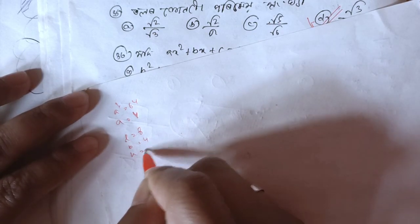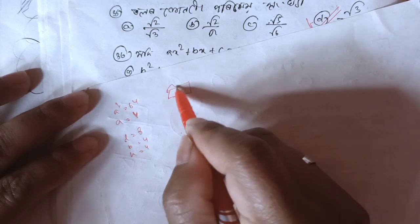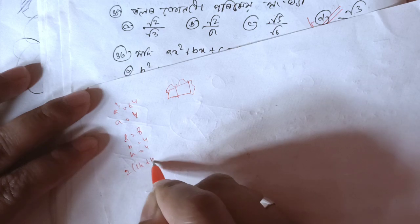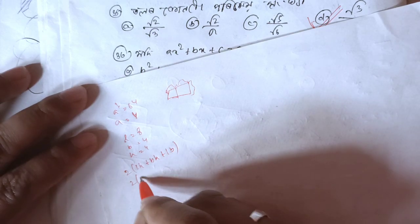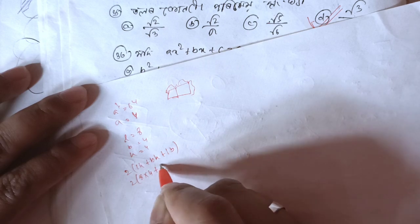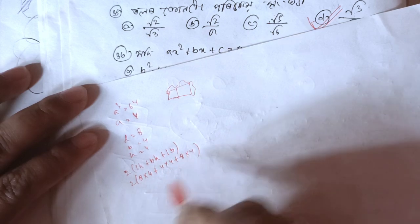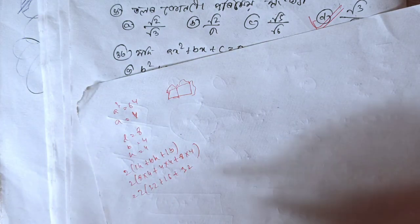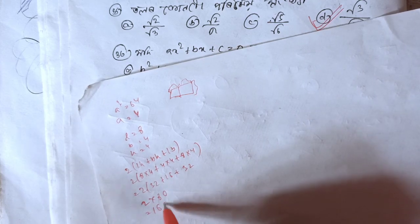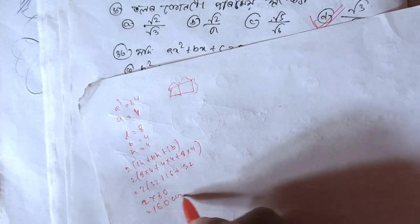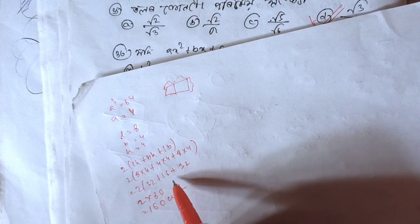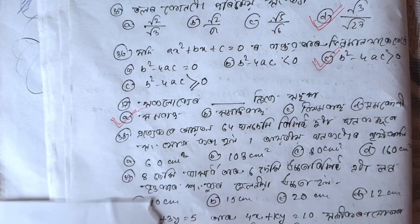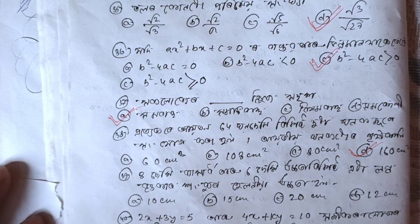B to 4 and H to 4. You will be able to join 2 into LH plus BH plus LB, giving L to 8 into H to 4 plus B to 4 into H to 4, plus L to 8 into 4. So 2 into 32 plus 16 plus 32 equals 2 into 80 plus Z. 1 to 16, 2 into 2, 2 into 160 plus Z.